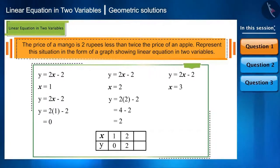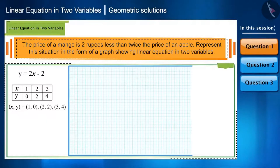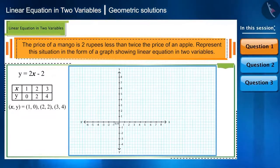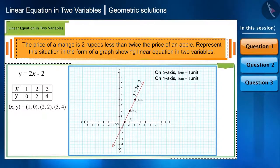Now without wasting much time, let's draw a graph with the help of these three coordinate points. First, mark the units on x and y axis. Plot all three coordinate points. Now draw a line through these points. And this will be the graph of the equation y is equal to 2x minus 2.